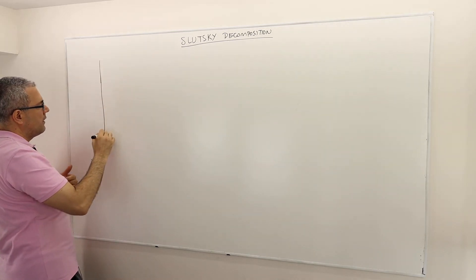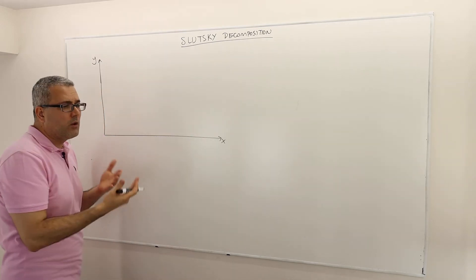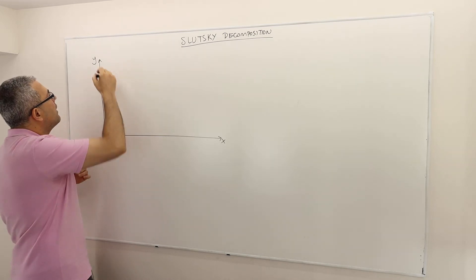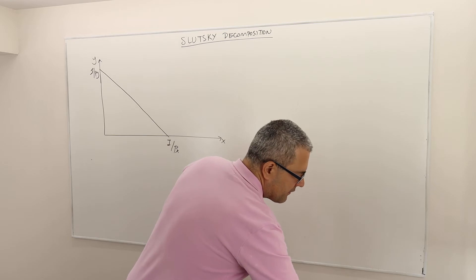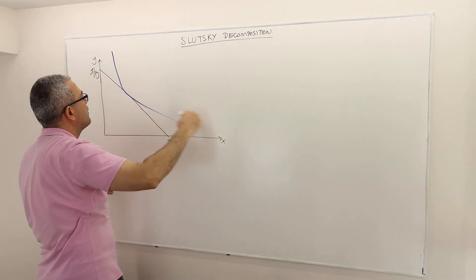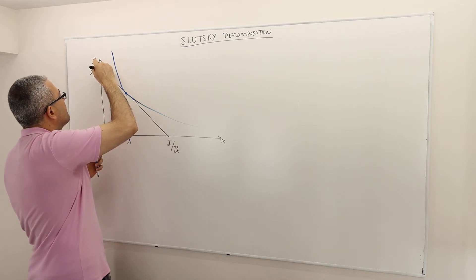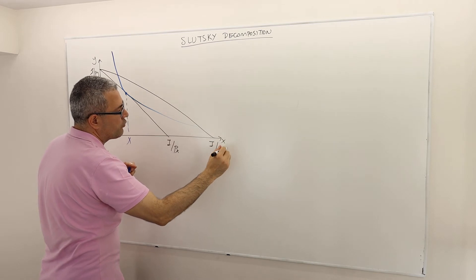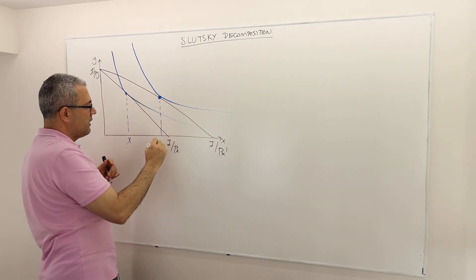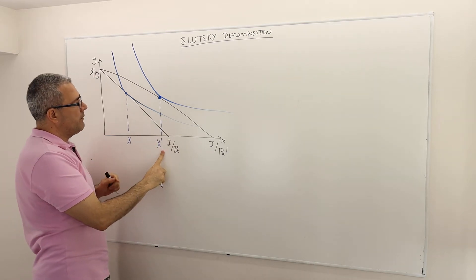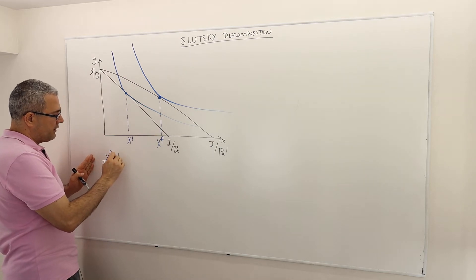Our starting point: goods X and Y. We use the two-good scenario because it's easier to visualize on a graph, but all our arguments work when we have more than two goods. This is the budget line, with intercepts I/PX and I/PY, and we have some indifference curve. Suppose this is the optimal point. When the price of good X decreases to PX prime, the new optimal point is X prime. So X initial to X final is what we call the total effect.